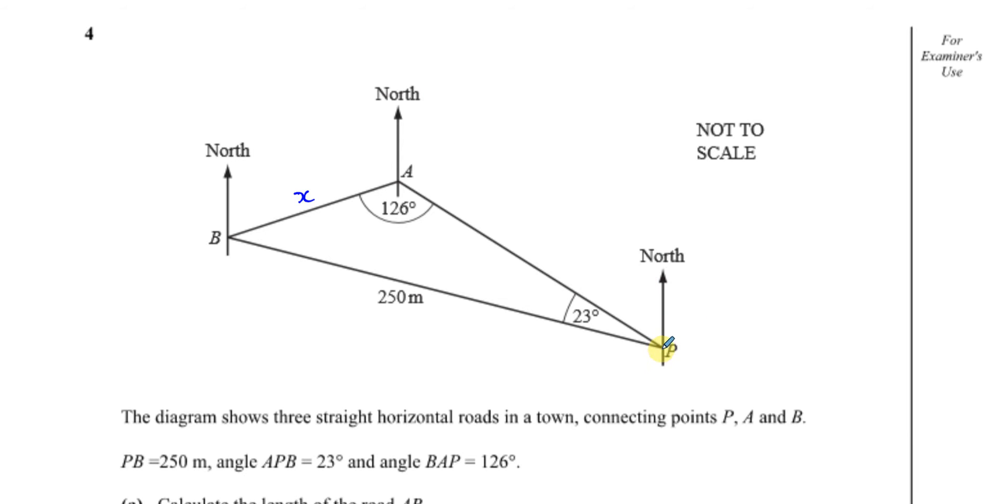When you find a bearing, you start from the north line. Bearings are always measured from the north line in the clockwise direction. From here we start going clockwise until we face A. This angle here is 303 degrees.